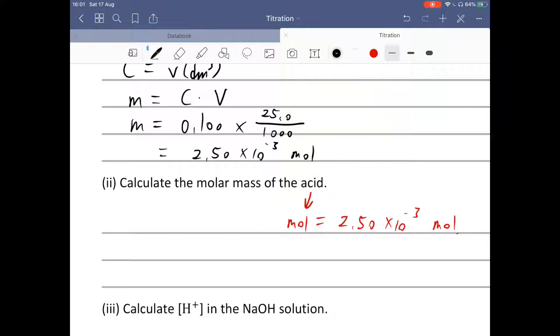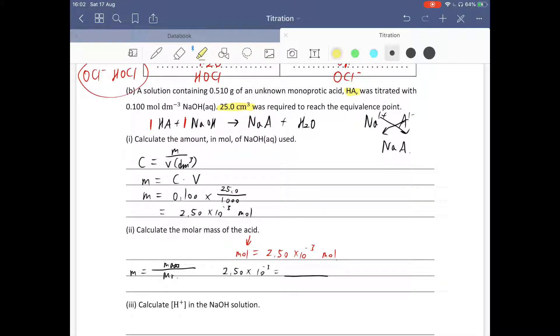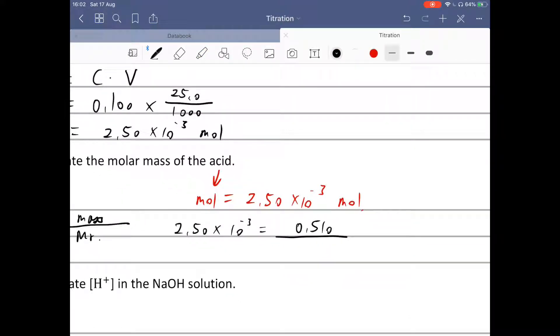You should know the formula, mole equals mass over molar mass. 2.50 times 10 to the power of negative 3 equals the mass, the mass for the monoprotic acid is mentioned here, it's 0.510 gram. So the molar mass for the monoprotic acid is 0.510 divided by 2.50 times 10 to the power negative 3, which is 204 gram per mole.